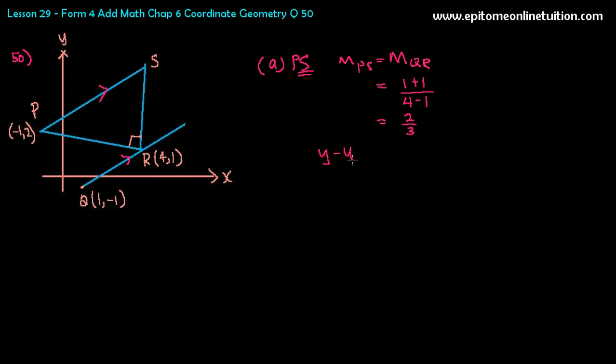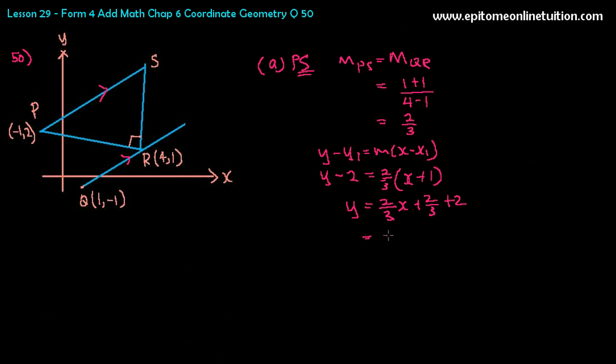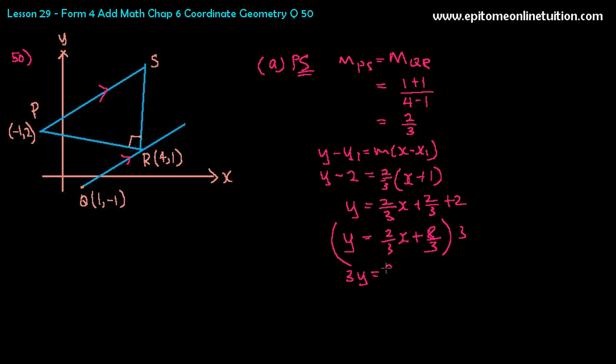So that's the gradient of PS, and you have a point. So you may directly substitute now. Y minus Y1 equals to M, X minus X1. So Y minus Y1 is 2. Substitute the point that passes through the line PS, that's point P equals to the gradient is 2 over 3. That would be X minus negative 1. So that's X plus 1. So Y is equal to 2 over 3 X plus 2 over 3 plus 2. So therefore, Y is equal to 2 over 3 X plus 8 over 3. And to make it look nice, you may multiply everything with a 3. So giving you 3Y equals to 2X plus 8. And that is the equation of the line PS.